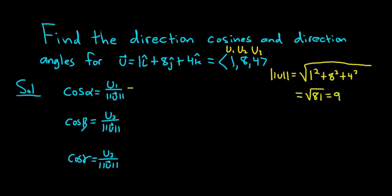So the cosine of alpha is u1 over 9, which is 1 over 9. That's our first direction cosine. The next one is u2 over 9, so 8 over 9. That's our second direction cosine, cosine of beta. And the last one is u3 over 9, so 4 over 9. That is the cosine of gamma.